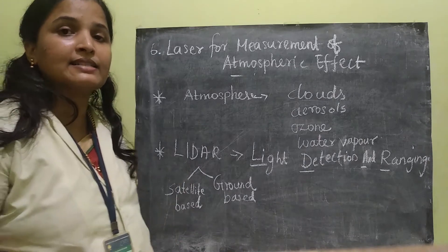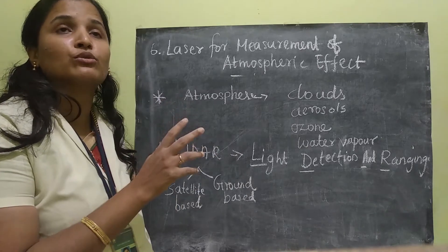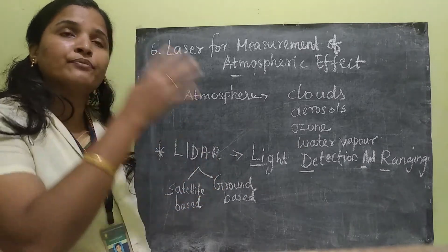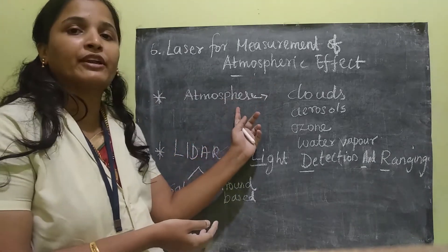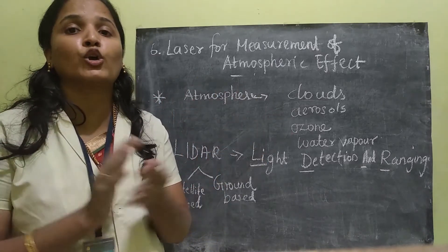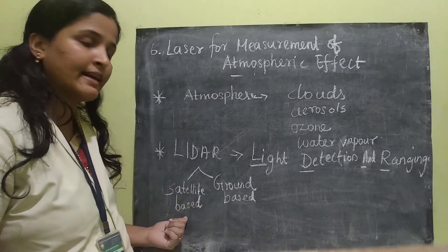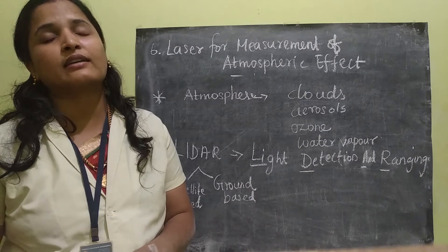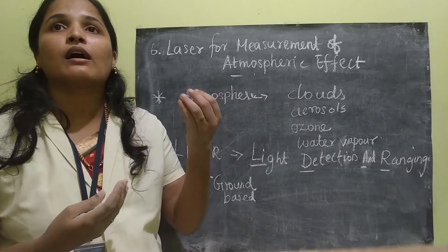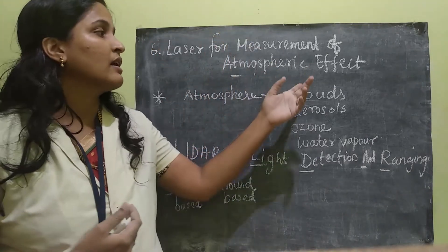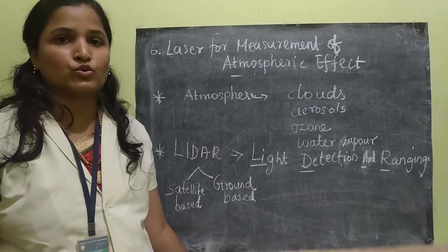Satellite-based LIDAR is a sensor device attached to a satellite. From the satellite, it can monitor all cloud changes and all atmospheric effects globally. So global measurements are possible using satellite-based LIDAR. The second type is ground-based LIDAR, where laser pulses are used from the ground for monitoring clouds and atmospheric effects at a local or regional level.